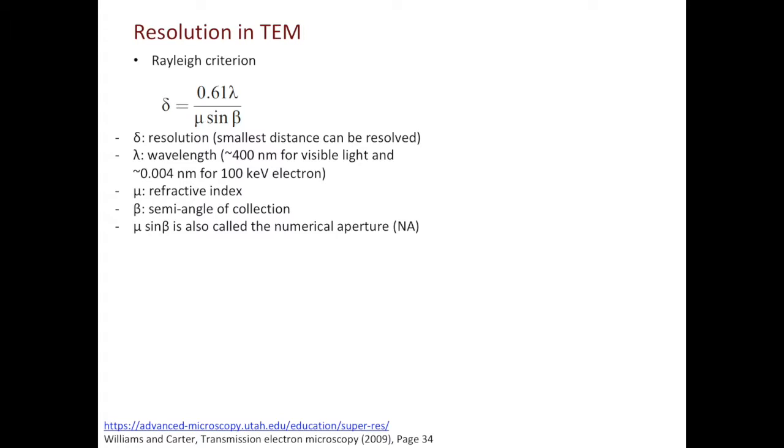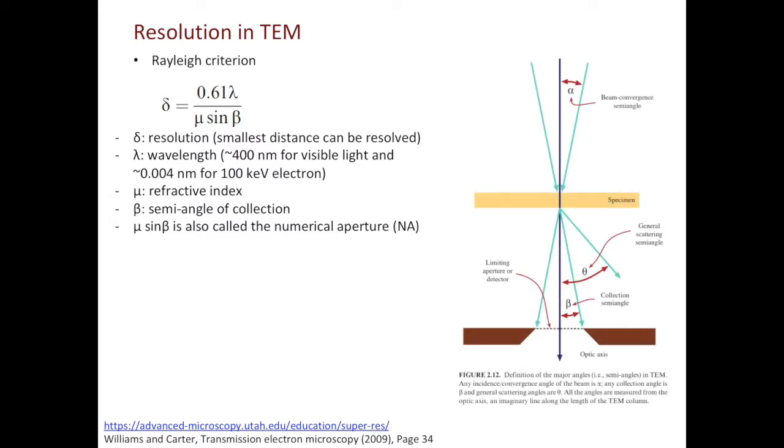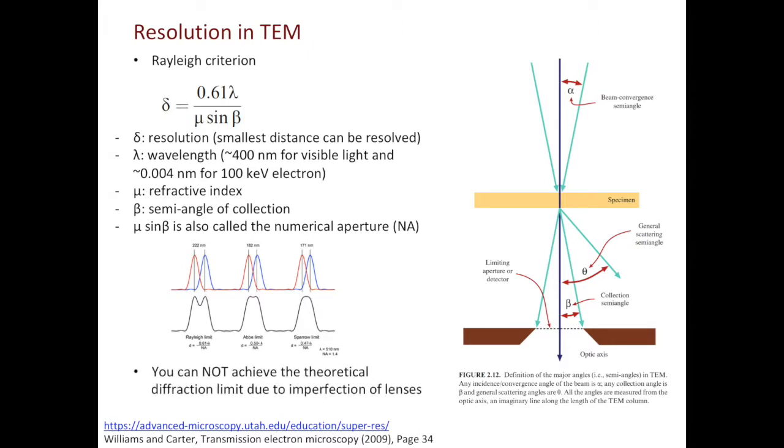Just a couple more words on the angles alpha and beta. They will appear again and again in the future videos. Alpha is called the convergence semi-angle. You can tune that by converging or spreading out the beam. Beta is called the collection semi-angle. And the value of beta is determined by the size of the aperture. Note that the Rayleigh criterion is not the only criterion you can use. There are other criterion you may consider when calculating the resolution. A very important point to make is that you can never achieve the theoretical diffraction limit of electron beam. This is due to the imperfection of lenses. Spherical aberration and chromatic aberration are examples of lens imperfections.